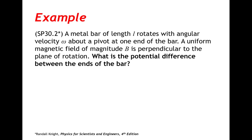A metal bar of length L rotates with angular velocity omega about a pivot at one end of the bar. A uniform magnetic field of magnitude B is perpendicular to the plane of rotation. What is the potential difference between the ends of the bar?